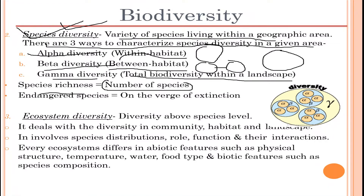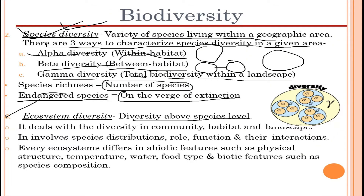Endangered species are those on the verge of extinction. The third level of biodiversity is ecosystem diversity, which is diversity above the species level. It is not restricted to species level but includes more other organisms as well, and deals with diversity in community, habitat, and landscape.